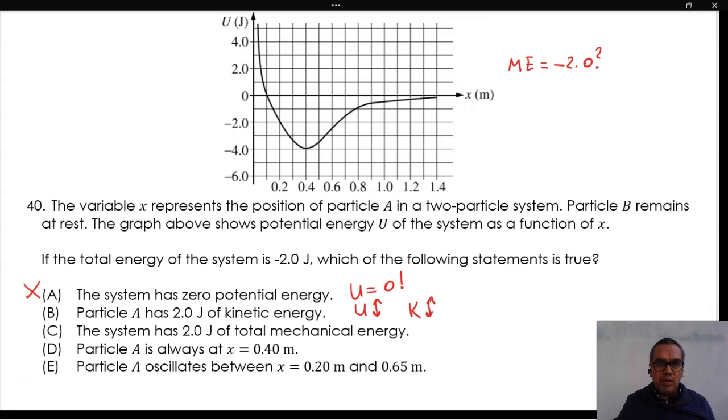The system has 2.0 joules of total mechanical energy. Remember that it is completely different to have positive or negative mechanical energy for a system. The statement of the situation indicates that this system is bound because the total mechanical energy is negative.